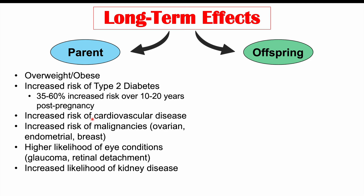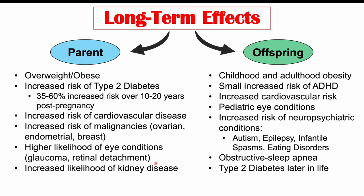Long-term maternal risks also include cardiovascular disease, malignancies such as ovarian, endometrial, and breast cancer, eye conditions including glaucoma and retinal detachment, and kidney disease. In the offspring, long-term risks include childhood and adulthood obesity, a 15 to 20 percent increased risk of ADHD, increased cardiovascular risk, pediatric eye conditions, neuropsychiatric conditions such as autism, epilepsy, infantile spasms, and eating disorders, obstructive sleep apnea, and type 2 diabetes later in life.